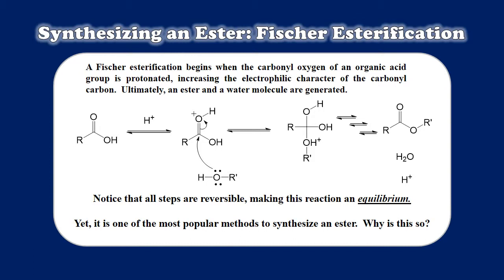This week we'll be dealing with the Fischer esterification, a very popular reaction which allows us to turn organic acids and alcohols into esters using a mineral acid catalyst. It's a great reaction to use and very popular, but it's also in equilibrium — it doesn't run completely to a state in which only the product is present and all the starting material has been consumed. So why is it such a popular way to convert these reagents into esters when we know from the beginning that it's never going to be completely done?